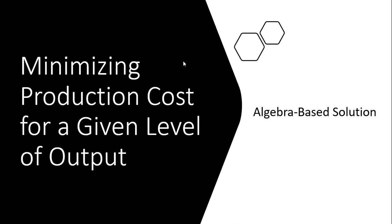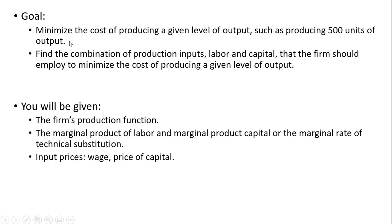Hello, in this video we're going to look at minimizing production costs for a given level of output, using only algebra. The goal is to minimize the cost of producing a given level of output — for example, 500 units. We want to find the combination of production inputs, labor and capital, that the firm should employ to minimize the cost of producing a given level of output.